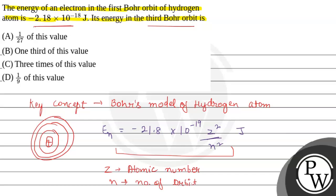According to the given question, we're talking about the first Bohr orbit, which means n = 1, and for the hydrogen atom, the atomic number is 1.